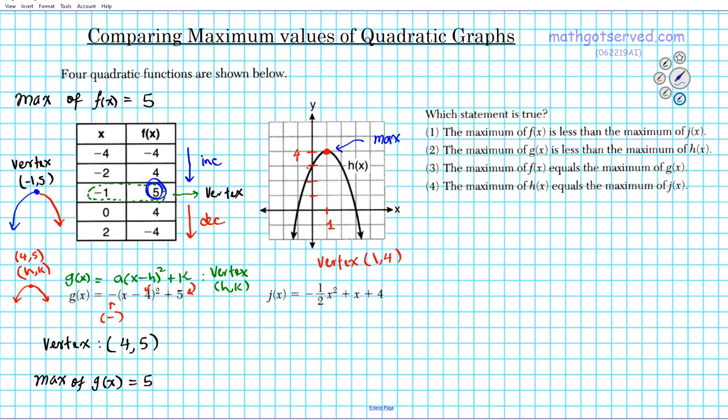So the maximum value, as we discussed earlier, is the output value, which is h of 1, in this case, which is 4. So our maximum of the h of x function is 4. That's the highest output value.